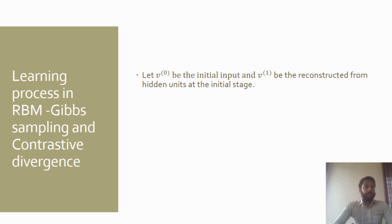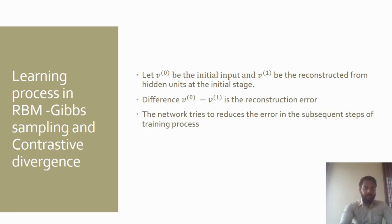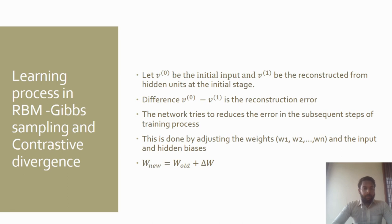Next is the learning process in RBM. It is done in two steps: Gibbs sampling and Contrastive Divergence. Gibbs sampling is the step in which the model tries to predict the hidden unit for the given input vectors in the forward pass and the input unit for the given hidden vectors in the backward pass, that is reconstruction.